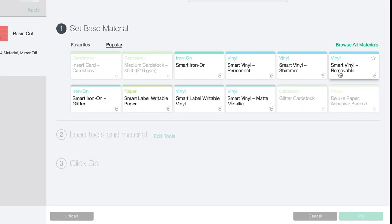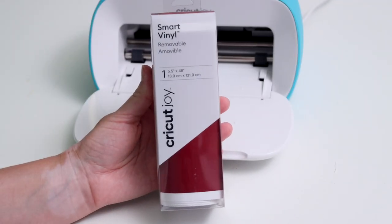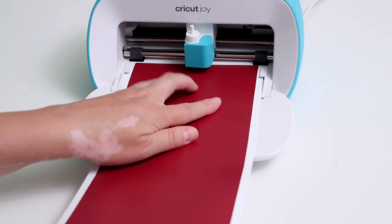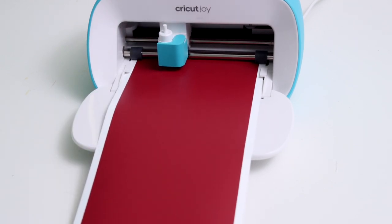And I don't need to use a mat for this project because I'm using these smart materials, which you'll see in a second. And then I can just go ahead and hit Continue, choose my material, and now we can go ahead and load our vinyl. So this is the smart vinyl that I was talking about.